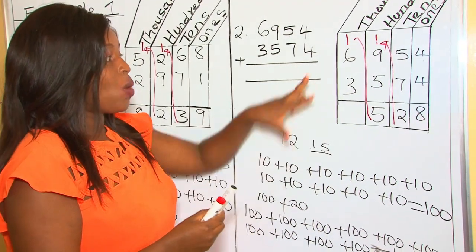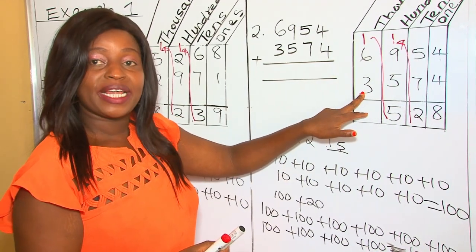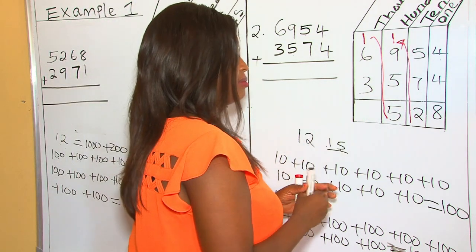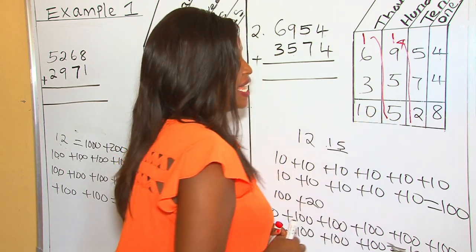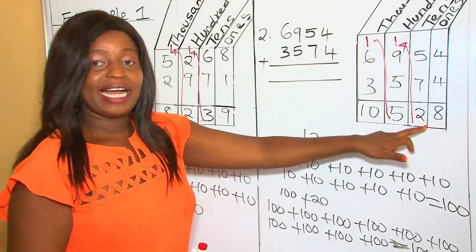So 1000 plus 6, we get 7000, plus 3, we get 10,000. So we put our 10 here. And our answer is 10,528.